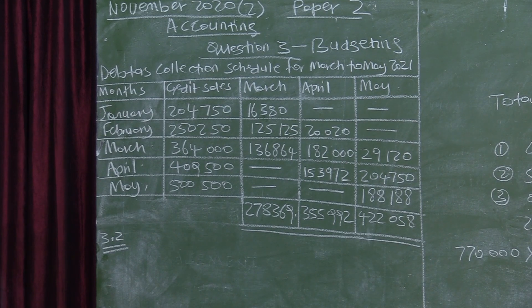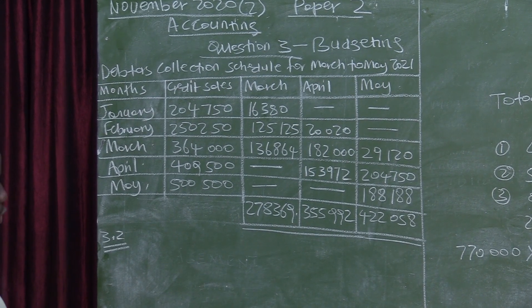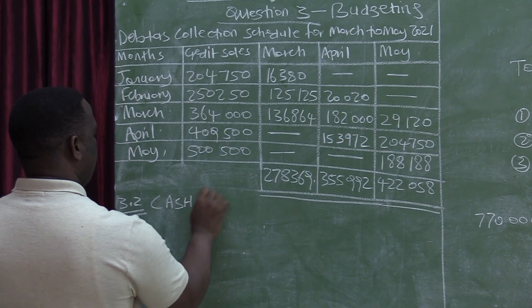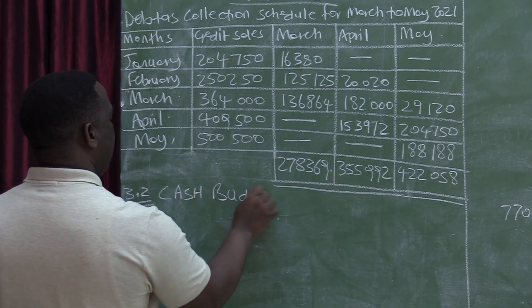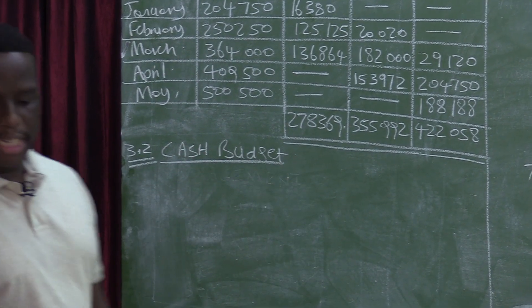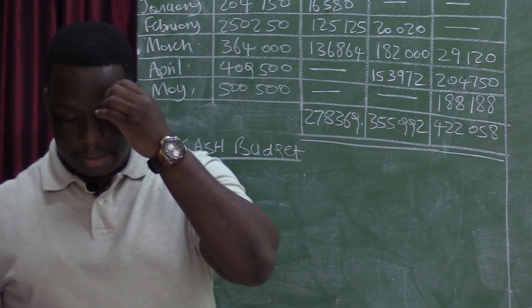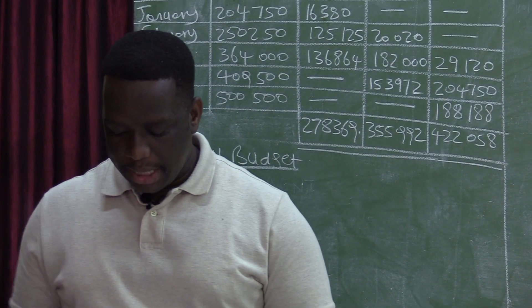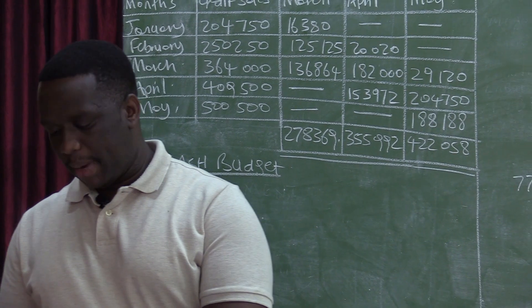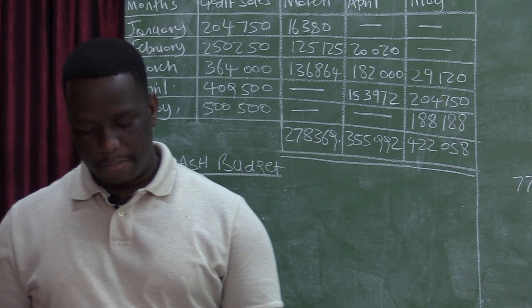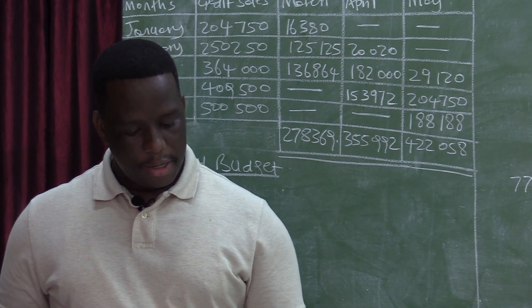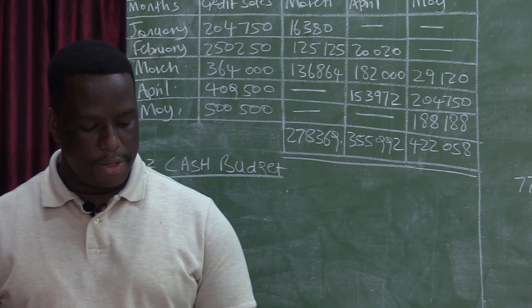Question 3.2 is based on the cash budget. We need to calculate certain amounts which are missing. It says to calculate the missing amounts indicated by A to D in the cash budget, for 14 marks. When you turn over to page 11, the cash budget is there and is given.